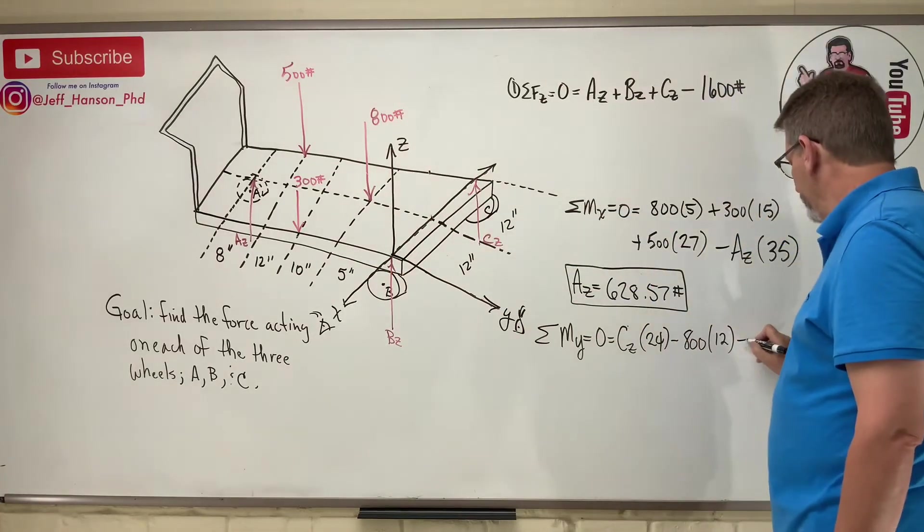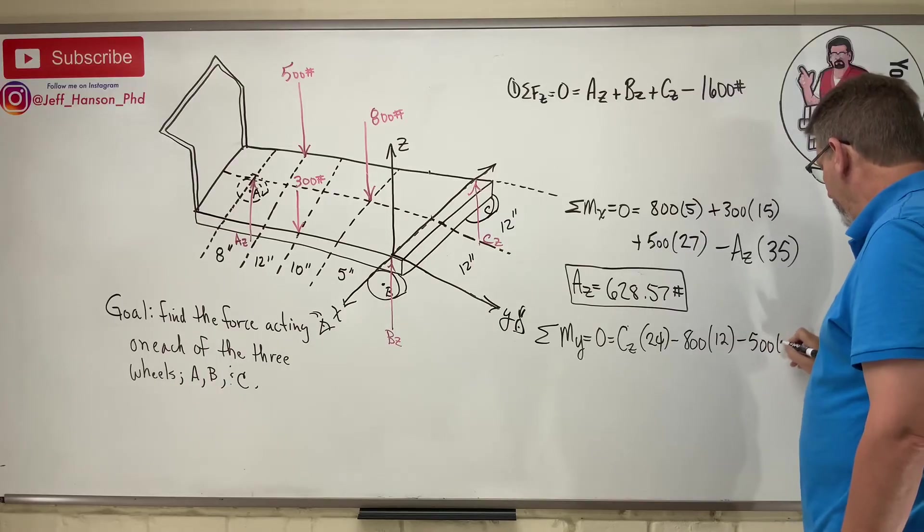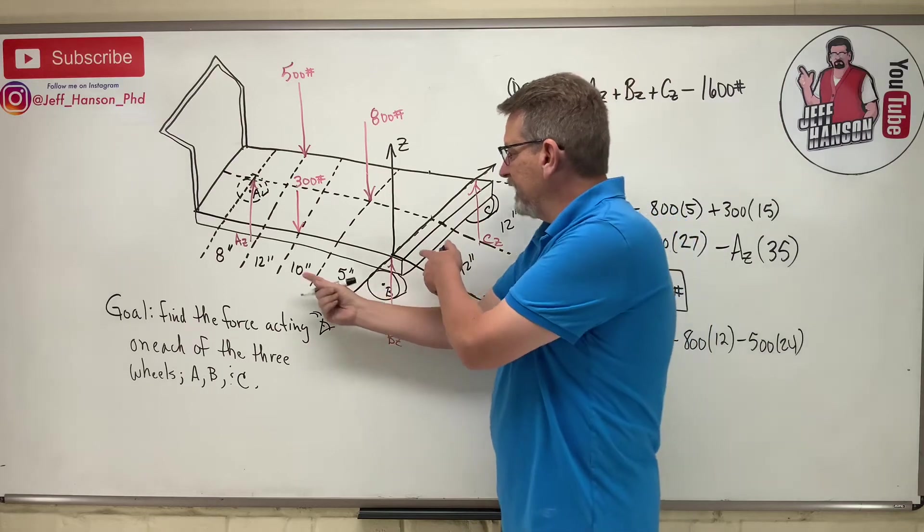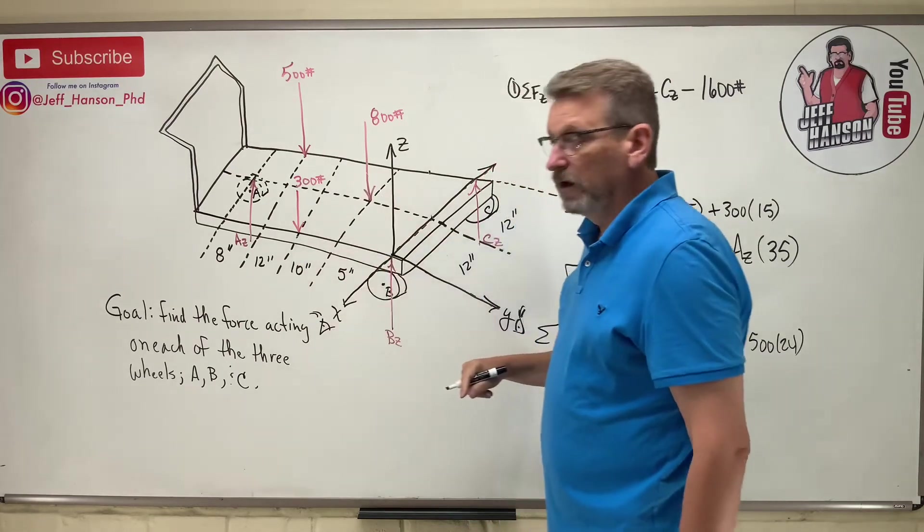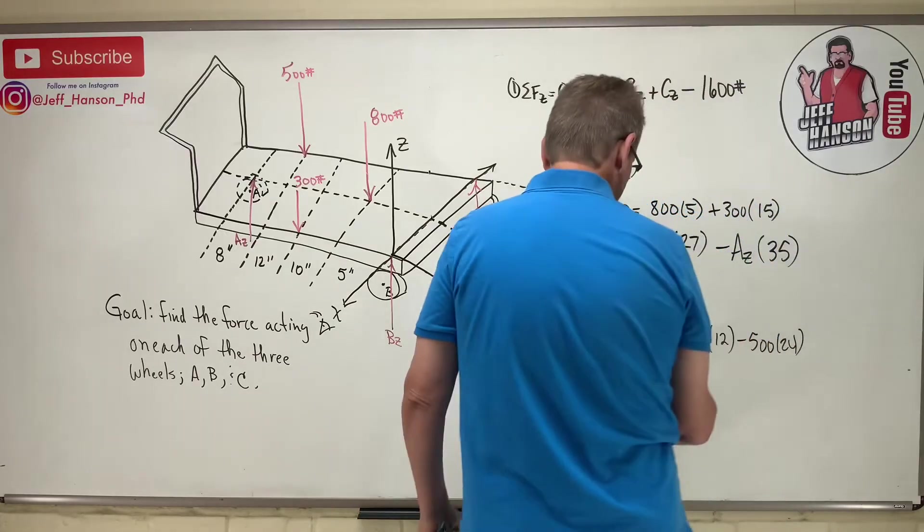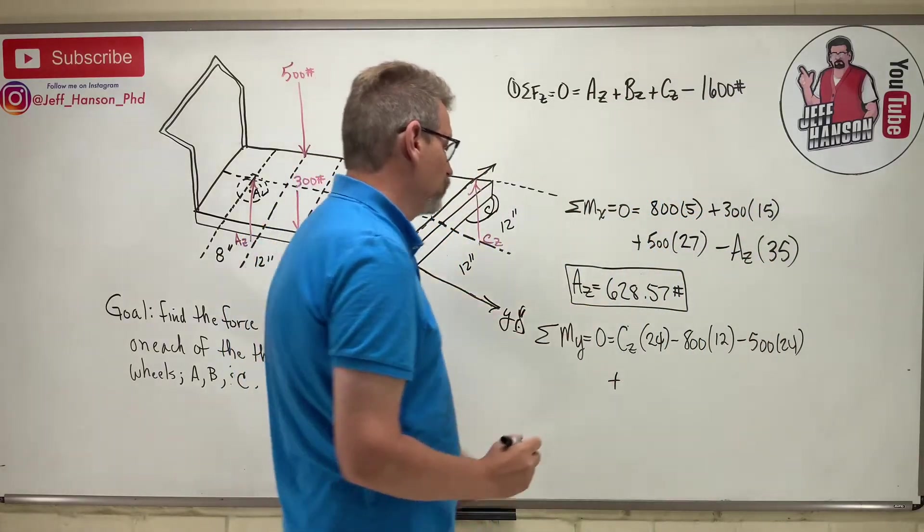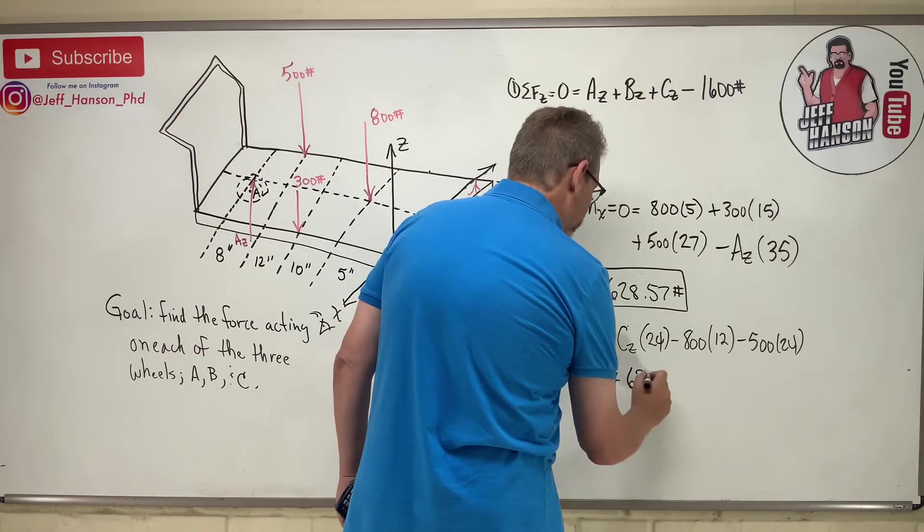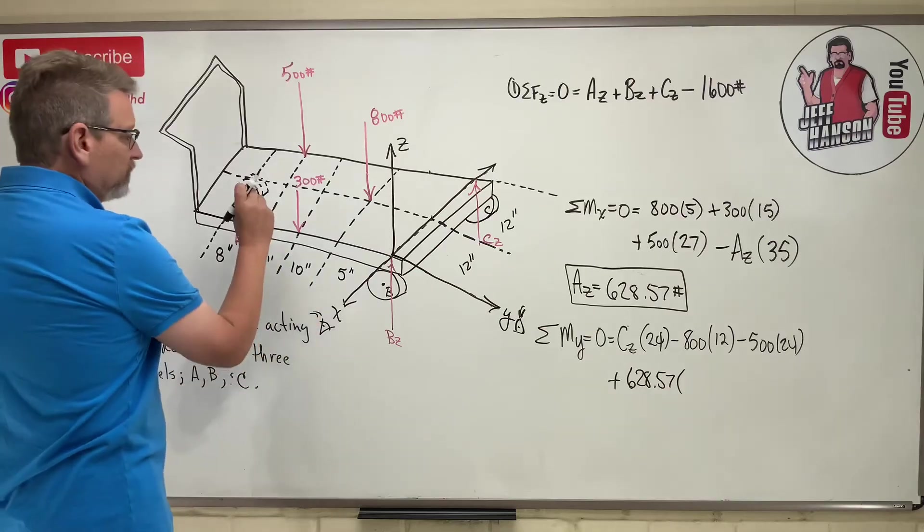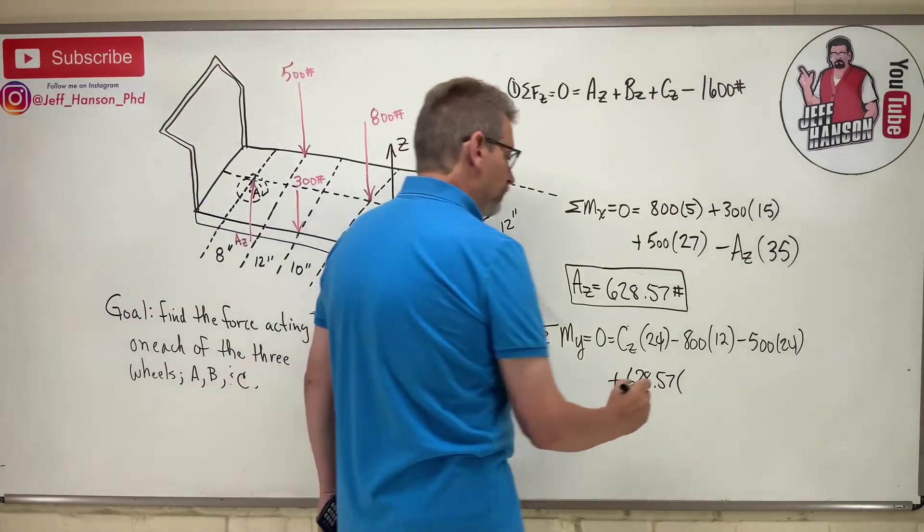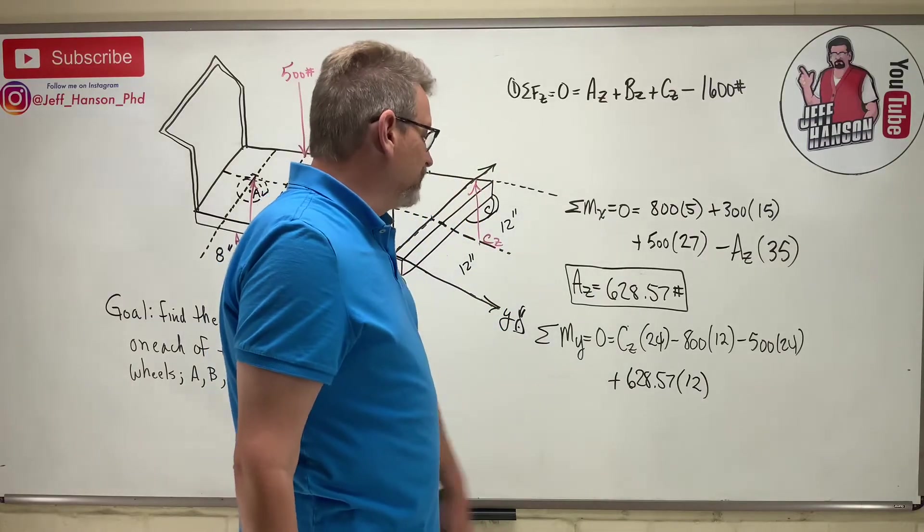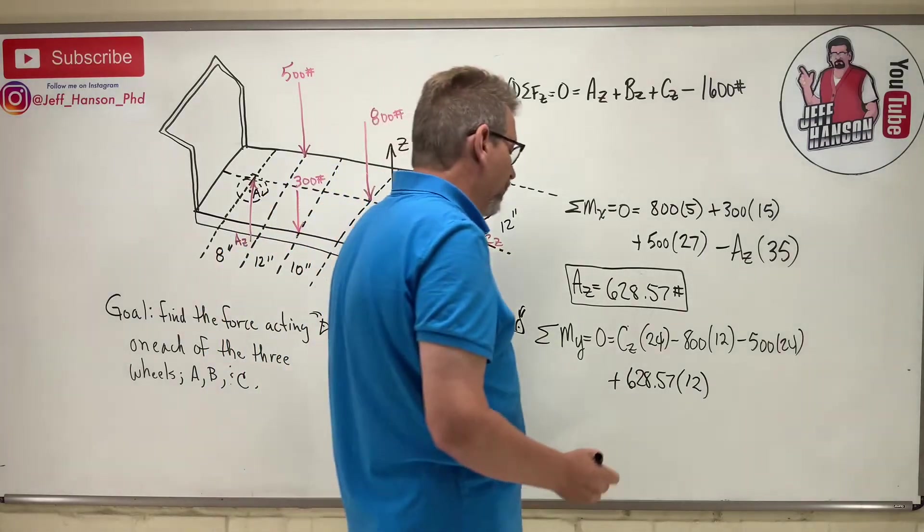And then the 800 rotates me also positive... right? No, he rotates me negative, doesn't he? That's clockwise. So minus 800 times how far away? 12. And then the 500 rotates me negative, so minus 500 times 24. And then the last one is Az, which rotates me counterclockwise, so that would be positive. So plus Az, 628.57, times how far away? 12.